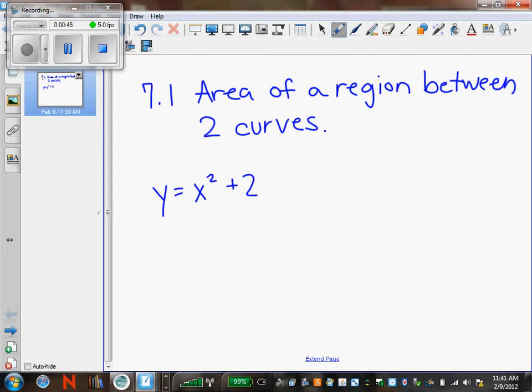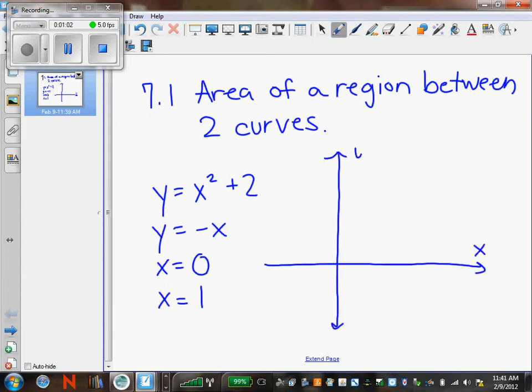y equals x squared plus 2, y equals negative x, x equals 0, and x equals 1. We want to draw the graph of those four curves.